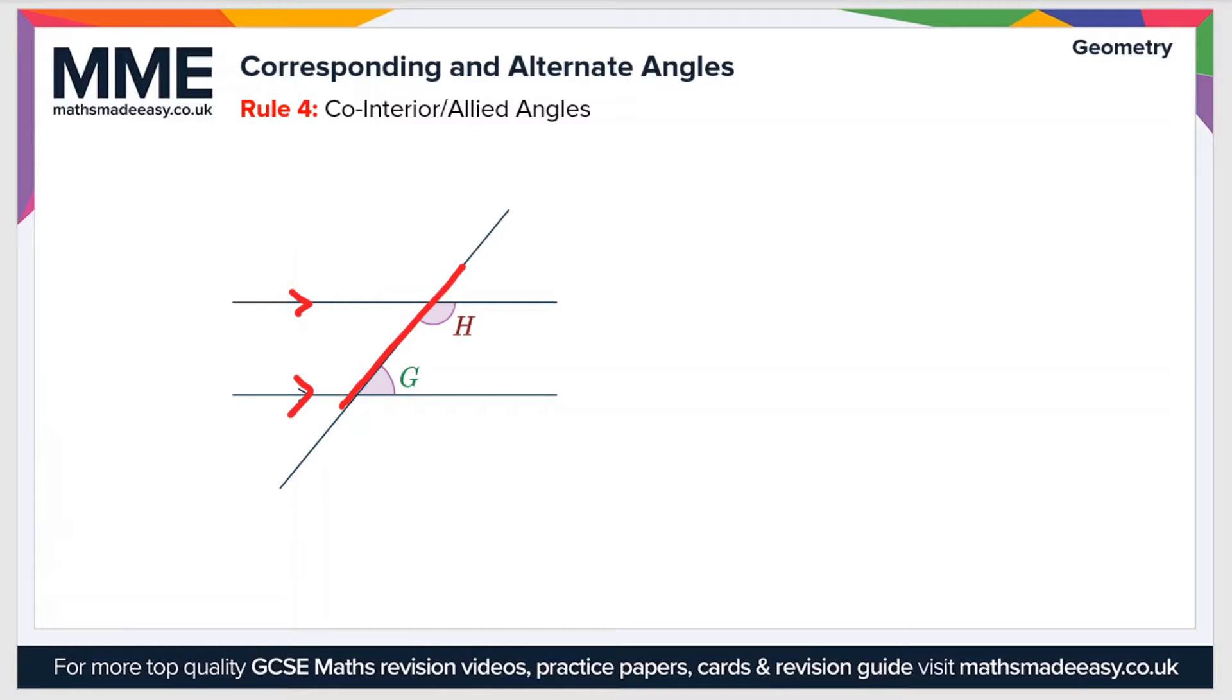This time they're not the same, but H plus G equals 180 degrees. So the sum of two co-interior or allied angles as they're sometimes known is 180 degrees.